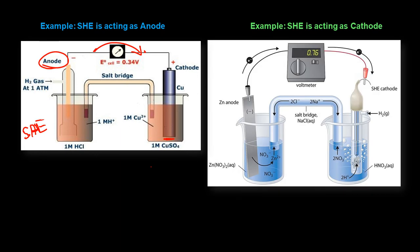In the other example where SHE acts as cathode, it is placed on the right-hand side. Zinc, on the left-hand side, is the anode: Zn is converted to Zn²⁺ and two electrons are released. These electrons move towards H⁺, which accepts them and is reduced to H₂. The behavior depends on the other system, and from the electrochemical series you can determine whether the other system coupled with SHE causes it to act as anode or cathode based on whether the value is negative or positive.